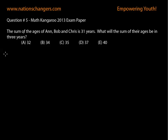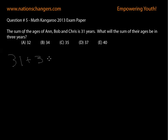So, we have the base age for them, which is 31. Then, for each of them, they're each going to have 3 years added to their age. So it's going to be plus 3 for Ann, plus 3 for Bob, and plus 3 for Chris.